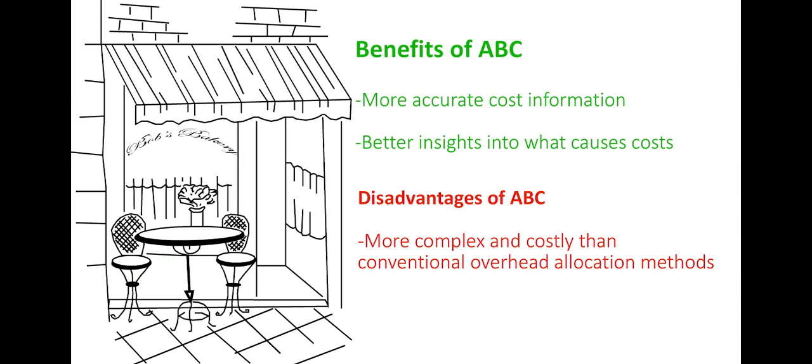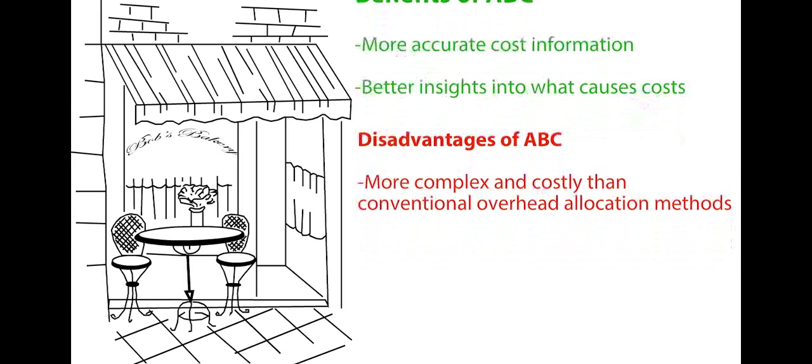The main disadvantages of ABC are that it is a more complex, time-consuming and costly system. For Bob's bakery, especially in a competitive market, the benefit of more accurate information is likely to outweigh his costs.